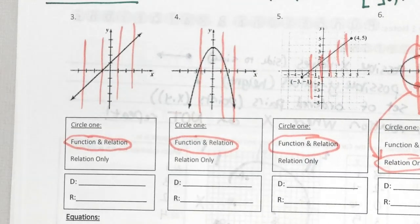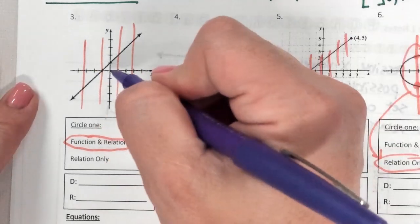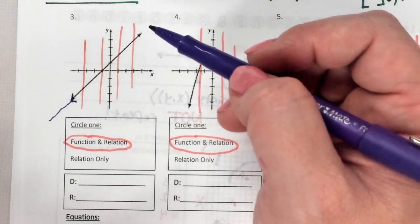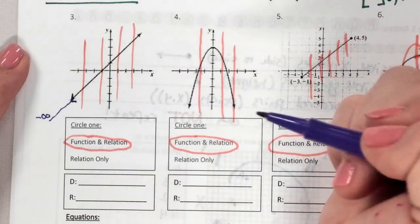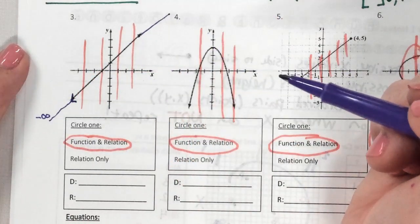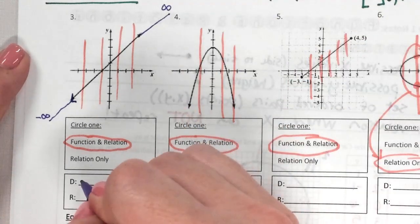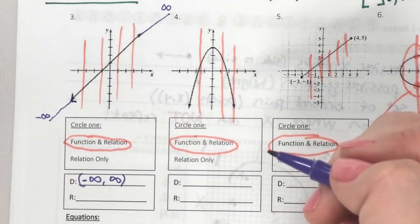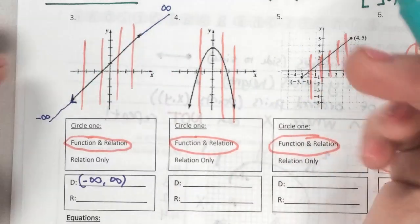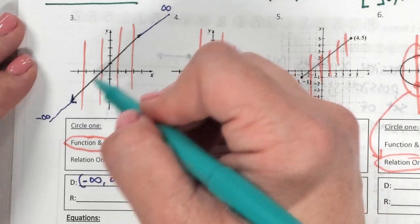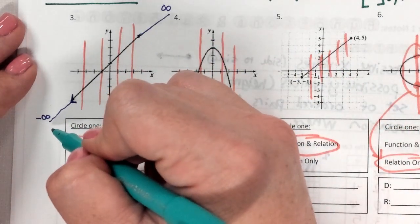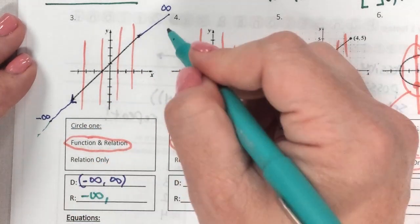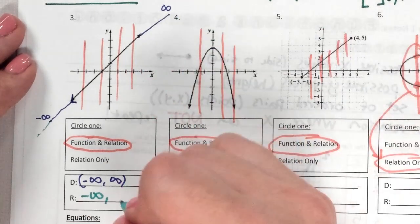Let's look at domain and range for this first continuous graph. Domain is my side-to-side — it has an arrow meaning it keeps going forever. Left is negative, so it's negative infinity. If it also goes to the right forever, that's positive infinity — meaning every single number is included for X. Range: this goes down forever — negative infinity — and it goes up forever — positive infinity.